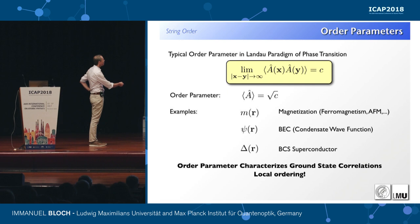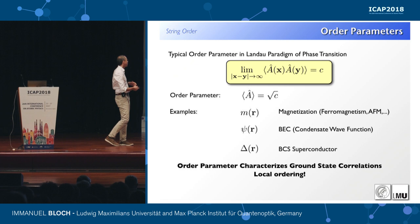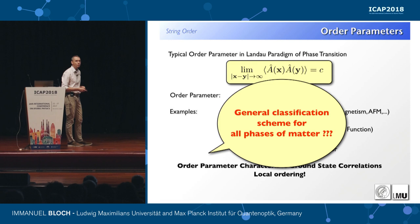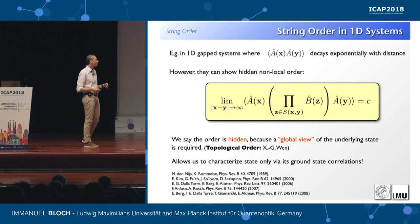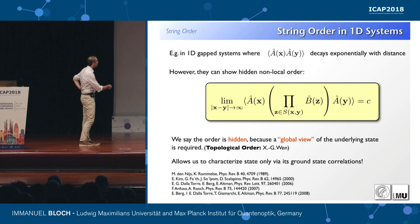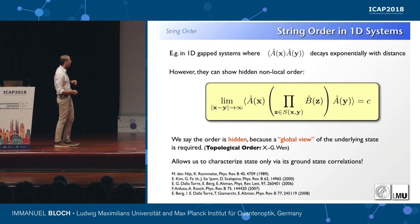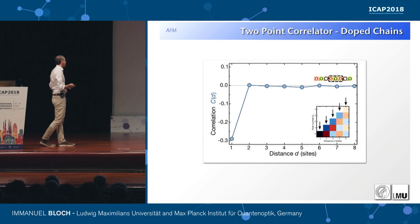This is a fundamental issue: how we define order parameters and classify quantum phases in nature. Typically, an observable measured at points X and Y goes to a constant at large distances — for example in a ferromagnet or a condensate. These are local order parameters. But nature hosts many non-local order parameters that can only be revealed with a global view on the many-body system — meaning you must also measure an observable on all sites between X and Y. Theory colleagues have long called these hidden order parameters because nobody thought they could ever be measured in an experiment.